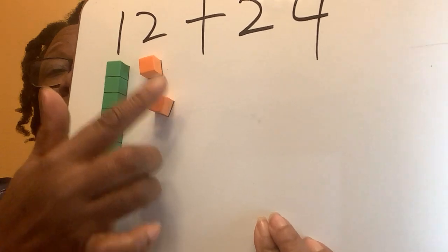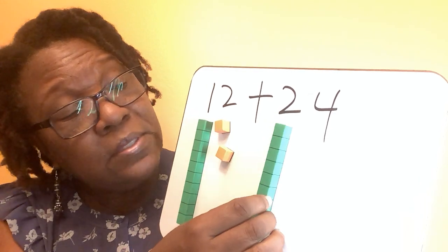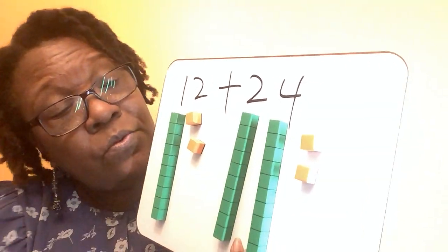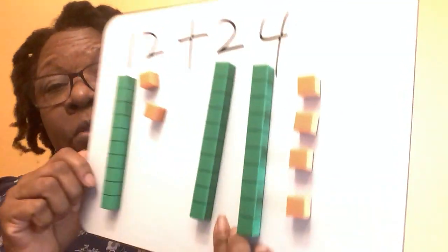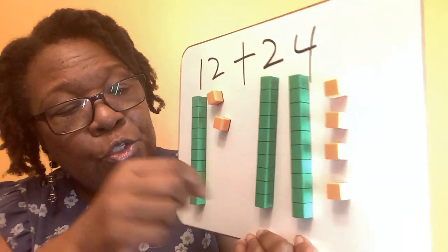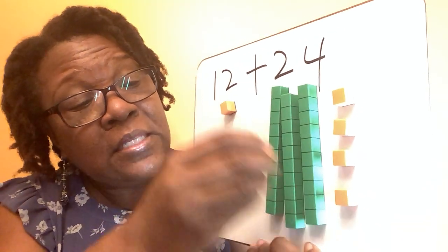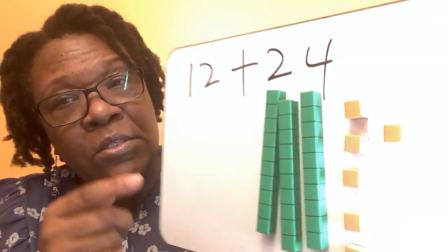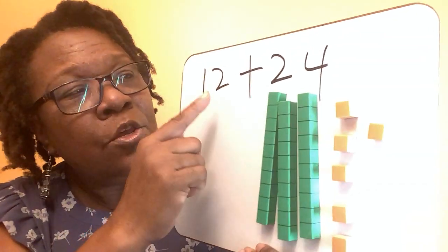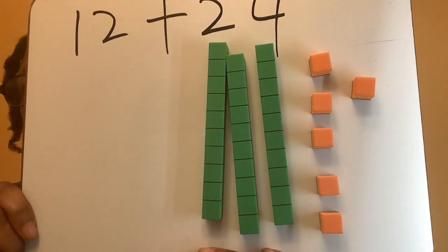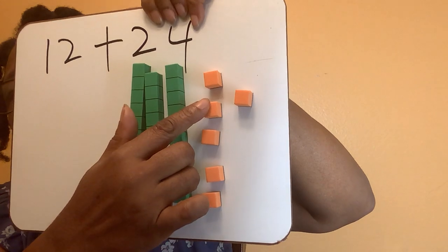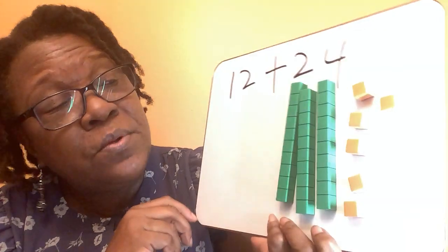I have 10, 11, 12 right here. I'm gonna put 24 on that side — 10, 20, 21, 22, 23, 24. So this is what the tools look like with 12 plus 24. I usually encourage my students to put all the tens together and all the ones together — it's easier to count. So we go 10, 20, 30, 31, 32, 33, 34, 35, 36. 12 plus 24 equals 36.